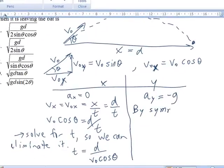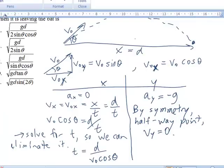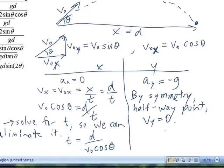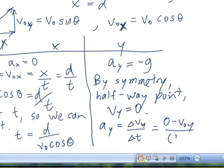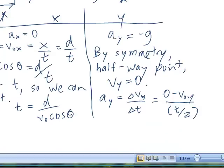By symmetry, at the halfway point, V sub y equals 0. It's going to stop going up and start coming back down. So we will say a sub y is equal to delta v sub y over delta t, which is going to be 0 minus V initial y divided by t over 2. This is one of many ways of doing this problem. But when you have some symmetry, it's good to exploit it.